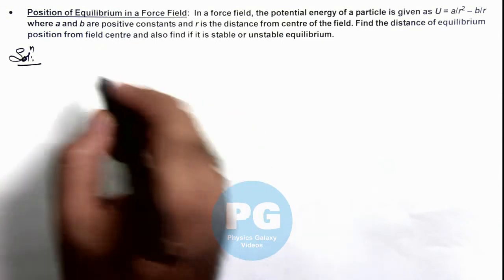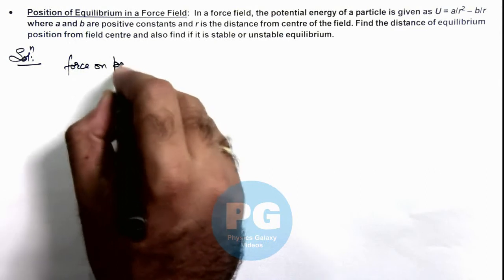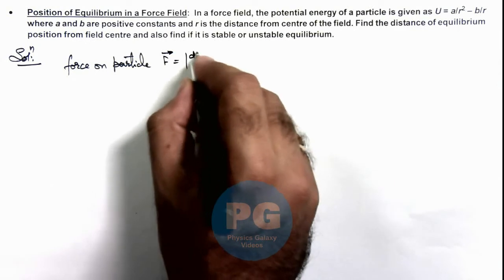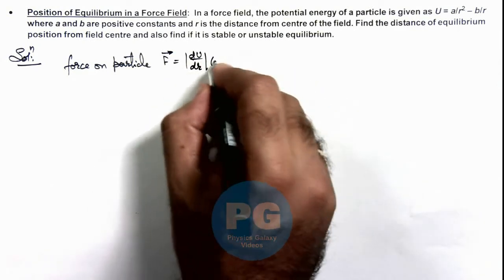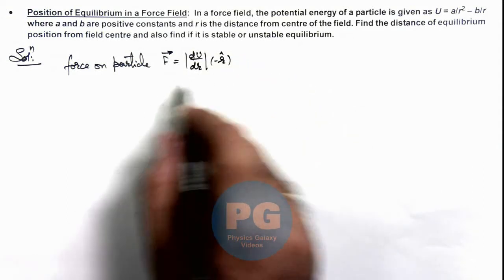Here we can directly calculate the force on the particle. The magnitude is given as dU/dr, and the direction would be -r̂, where r is the position vector of the particle with respect to the center.